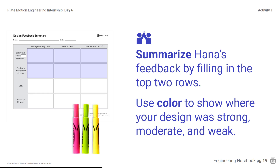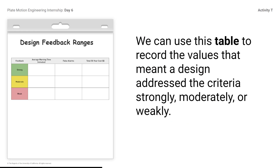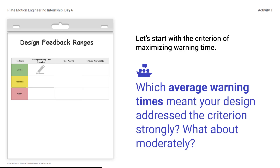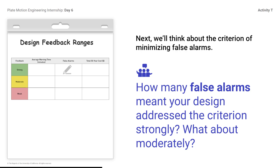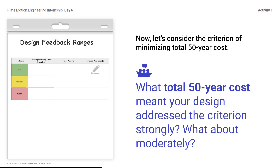You will complete the goal and design sections later. We can use this table to record the values that meant a design addressed the criteria strongly, moderately, or weakly. Let's start with the criterion of maximizing warning time — which average warning times meant your design addressed the criterion strongly? What about moderately? Next, we'll think about the criterion of minimizing false alarms. Now let's consider the criterion of minimizing total 50-year cost — what total 50-year cost meant your design addressed the criterion strongly or moderately?